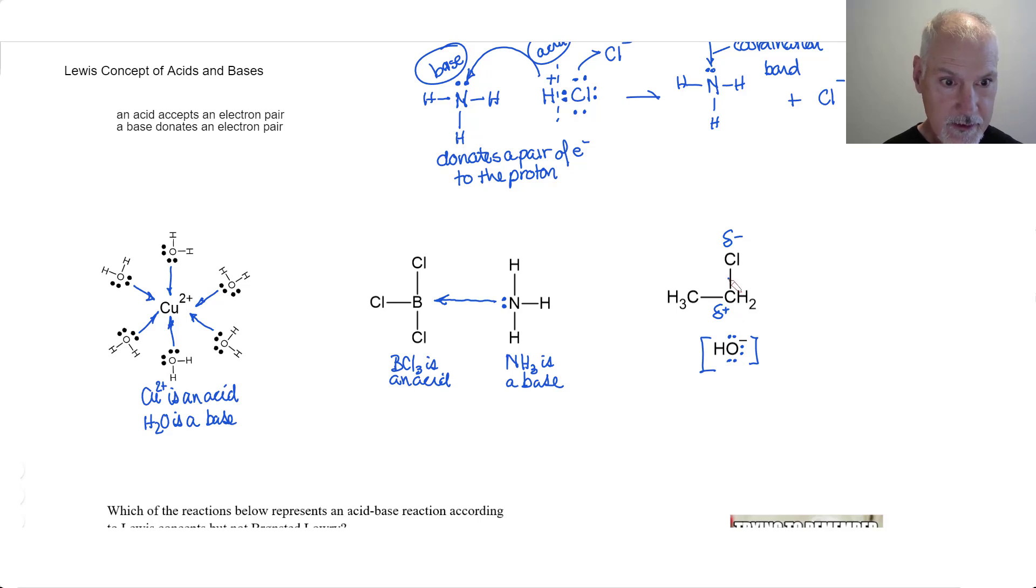these electrons essentially leave with the chlorine. So, no longer is it a partial charge, but it becomes a fully negative charge. And also, the carbon now, instead of being slightly positive, becomes fully positive, called a carbocation. But now we have a positively charged carbon that needs a pair of electrons. So, it now acts as an acid. It's looking to accept a pair of electrons from the hydroxide, which therefore acts as a base.